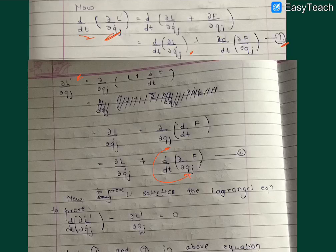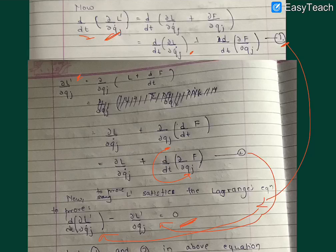Now we have to prove that this Lagrangian equation is satisfied for L prime. We'll put equation 1 here and equation 2 here.